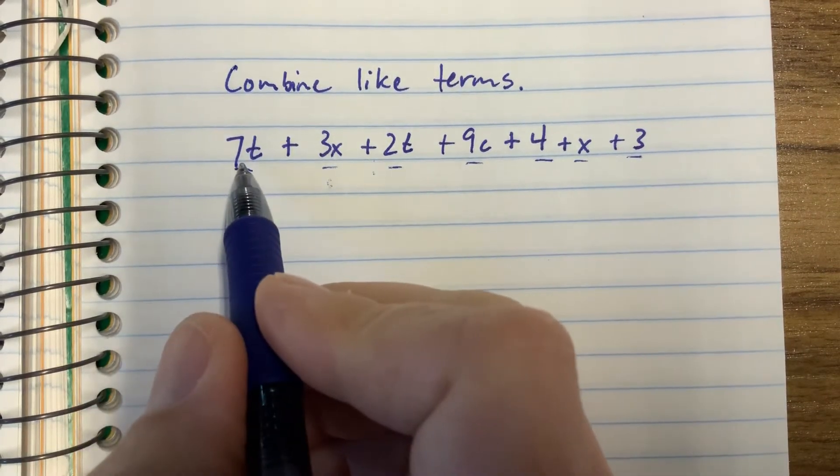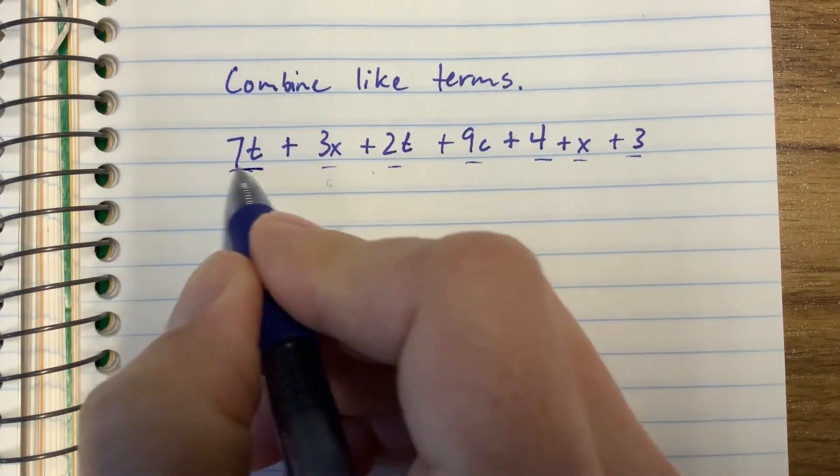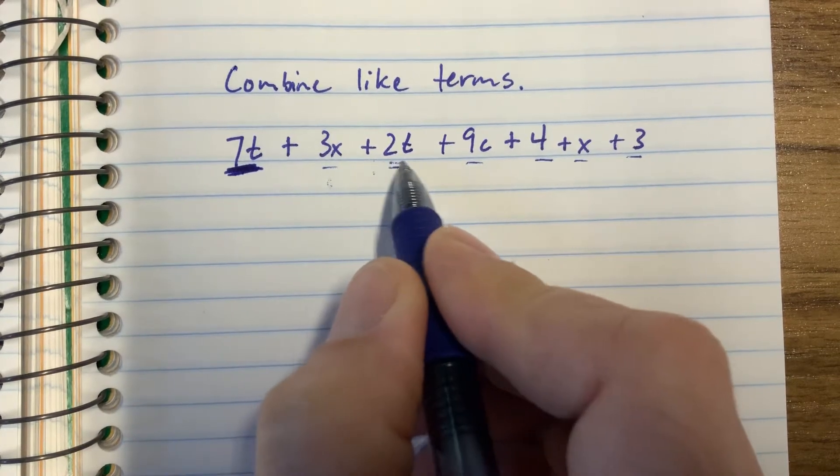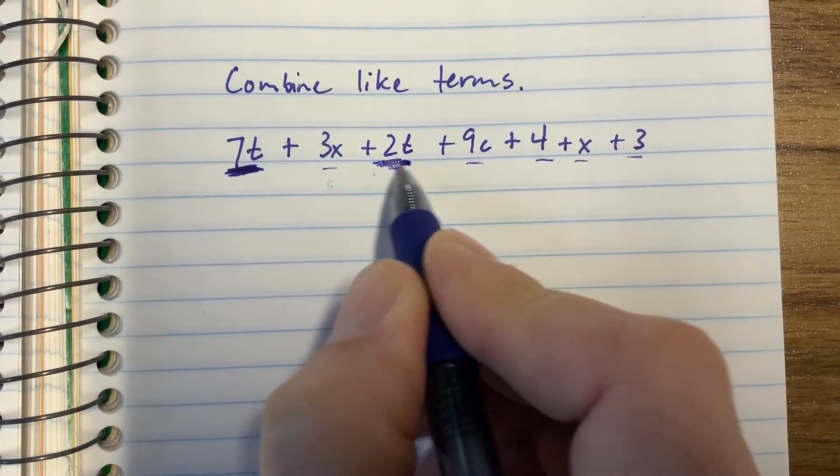So I start with the first one, 7t. I'm looking for other terms that have a t in it. 7 has a t, 3 does not have a t, 2 has a t. So we can combine those two.